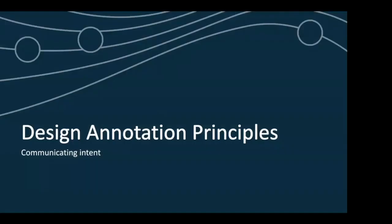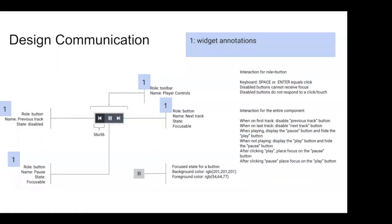Let's get into annotations and how we can communicate intent. The first type is widget annotations. We're looking at a wireframe of an audio player control — previous track, play/pause, and next track. Widget annotations cover the role of the given component and the accessible name — what will be read out when a user interacts with that content. The previous track is a button with the name 'previous track' and in the current state it's disabled.